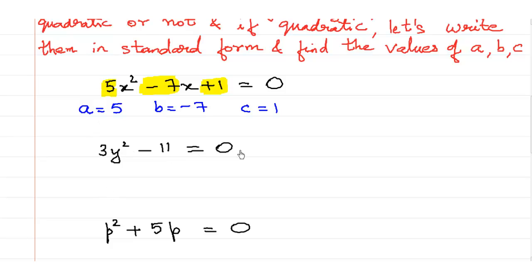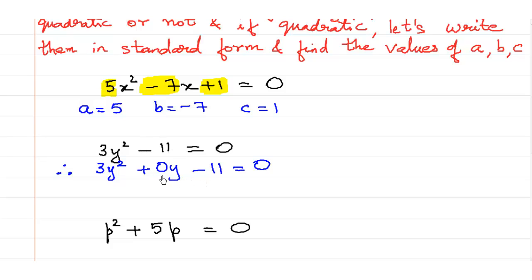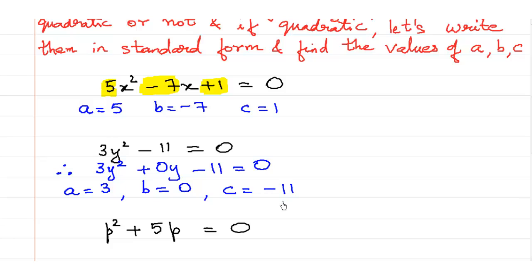Next: 3y² minus 11 is equal to 0. We can rewrite this as 3y² plus 0y minus 11 is equal to 0. We have y² but we do not have y and we directly have a constant, so we can put a coefficient of 0 before y. So the value of a is 3, the value of b is 0, and the value of c is minus 11.